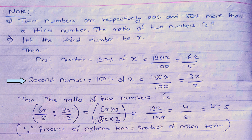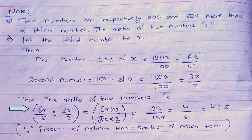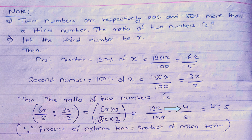For the second number, it is 50% more than x, so 100 + 50 = 150, giving 150% of x = 150x/100 = 3x/2. Now the ratio of the two numbers is (6x/5) : (3x/2). Using cross multiplication: (6x × 2) : (5 × 3x) = 12x : 15x = 4 : 5. So the ratio of the two numbers is 4 : 5.